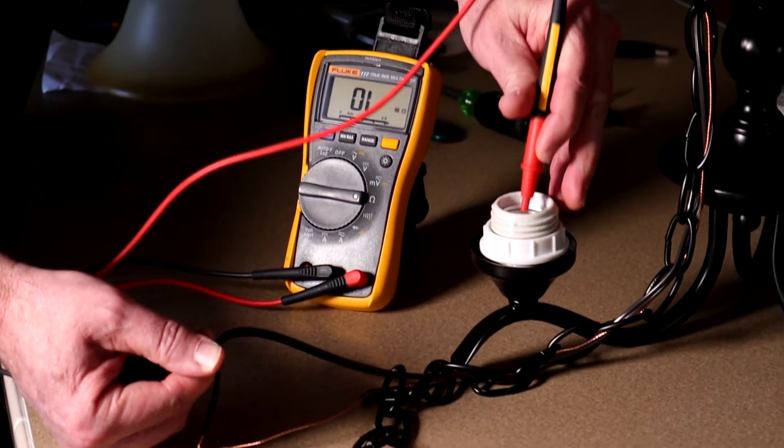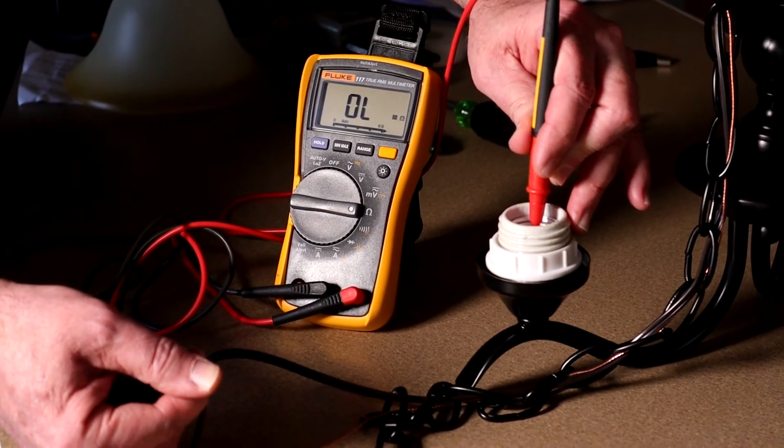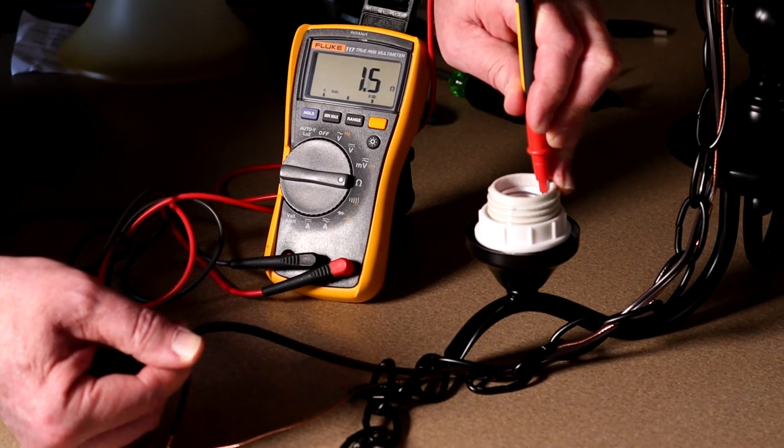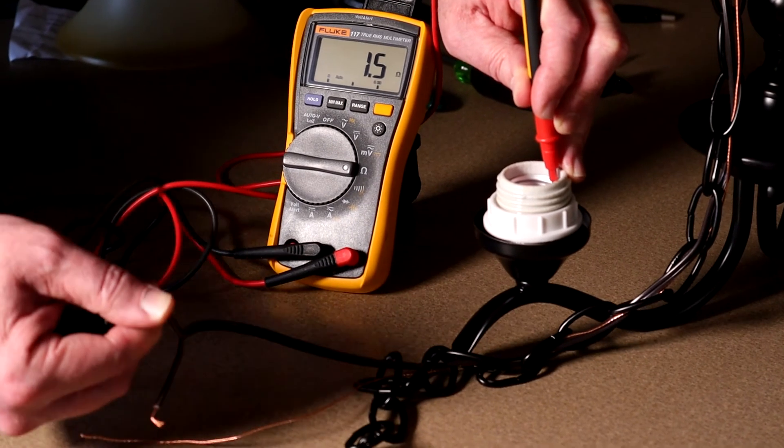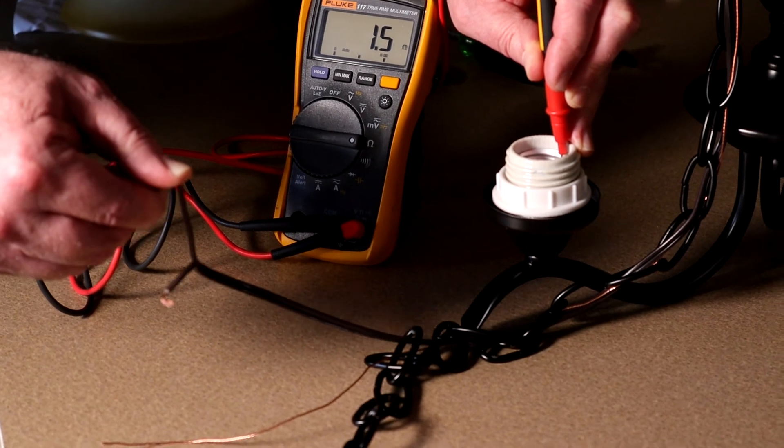The wire with ribs to the center post. You can see overload, no continuity to the center post, but the threads where the bulb will screw into. Yes, I have continuity 1.5 ohms. That's the ribbed wire. That's going to be your white wire in your electrical box.